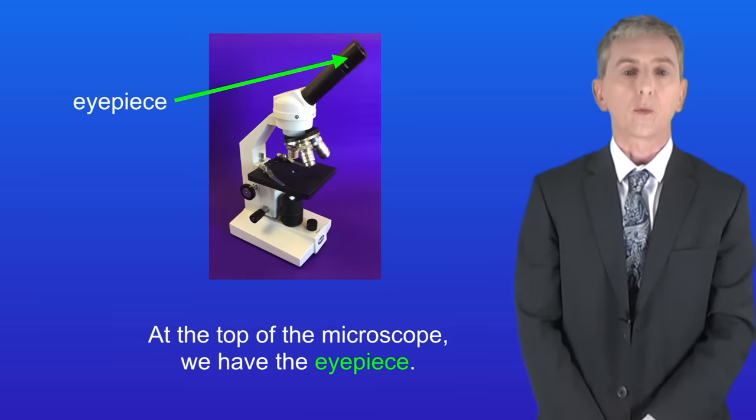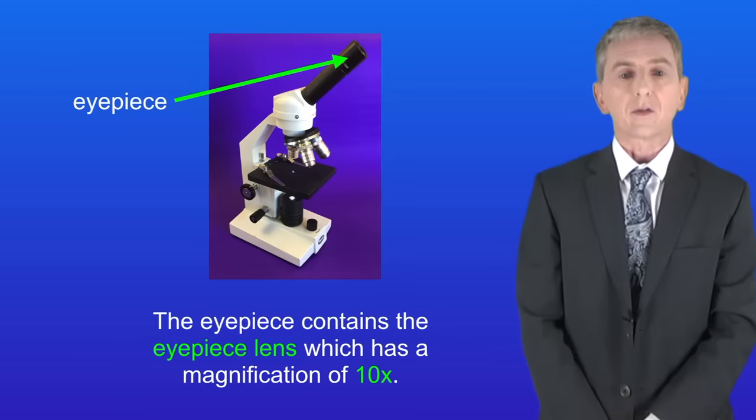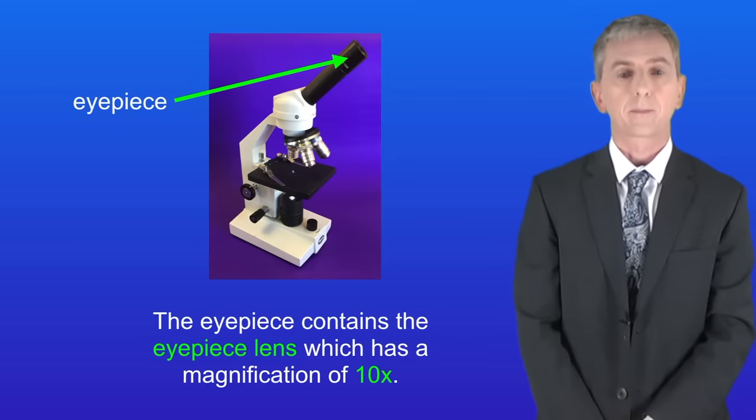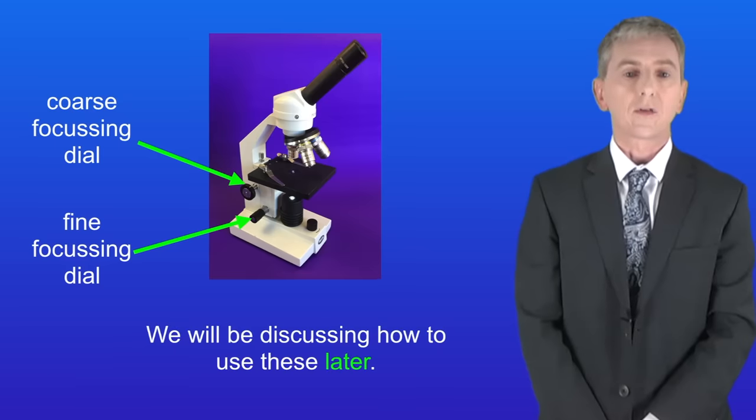At the top of the microscope we've got the eyepiece and this is where we look through. The eyepiece contains the eyepiece lens and that's got a magnification of ten times. The final parts of the microscope are the coarse focusing dial and the fine focusing dial, and we'll be discussing how to use these later.